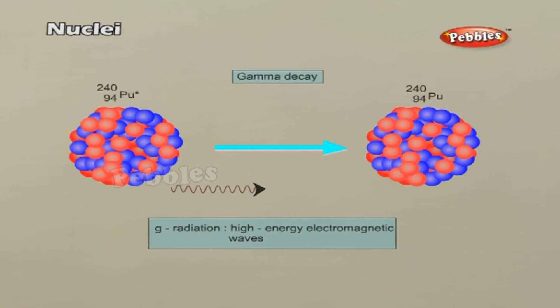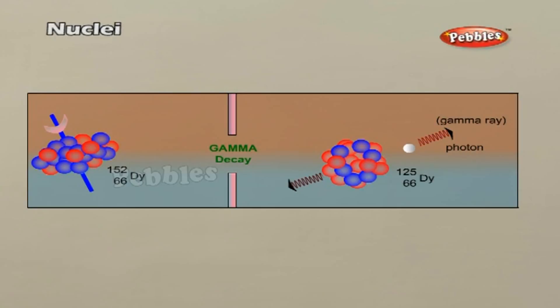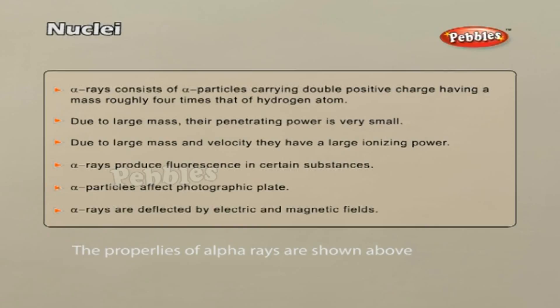Gamma decay. In gamma decay, a nucleus changes from a higher-energy state to a lower-energy state through the emission of electromagnetic radiation, that is, photons. The number of photons and the neutrons in the nucleus does not change in this process. So, the parent and daughter atoms are the same chemical element. In the gamma decay of a nucleus, the emitted photon and recoiling nucleus each have a well-defined energy after the decay. The characteristic energy is divided between only two particles. Properties of alpha rays. The properties of alpha rays are shown above.